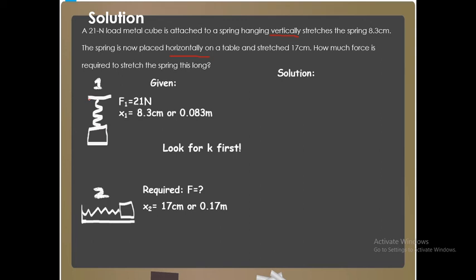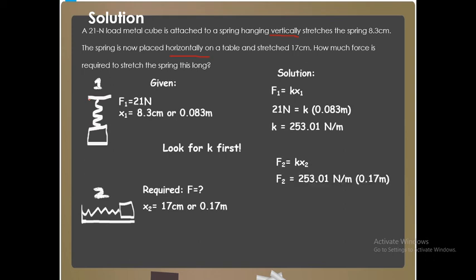We can only solve this problem if we look for k first. F1 equals kX1. We can solve k in our first scenario. 21 newtons equals k multiplied by 0.083 meters, and you now have the value of k, which is 253.01 newton per meter. Now we can use k to solve the force in our second scenario. F2 equals kX2. F2 equals 253.01 newton per meter multiplied by X2, which is 0.17 meters. F2 equals 43.01 newtons. Box or encircle your final answer. So it's simple, right? You can go back, rewind this video, slow it down until you get each step.